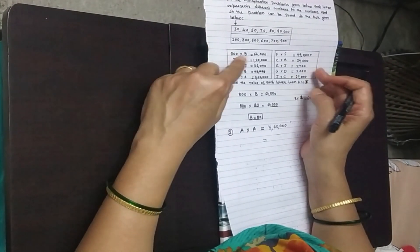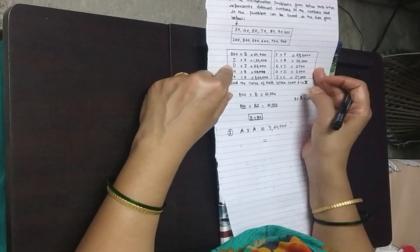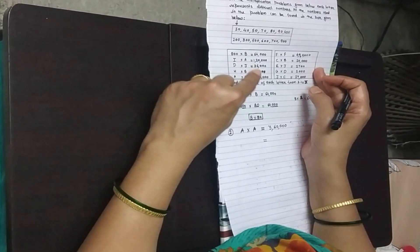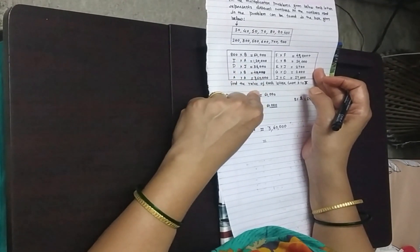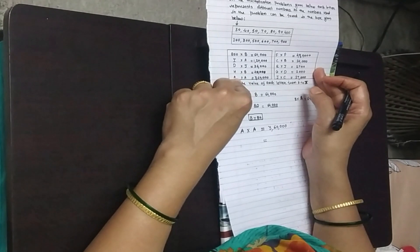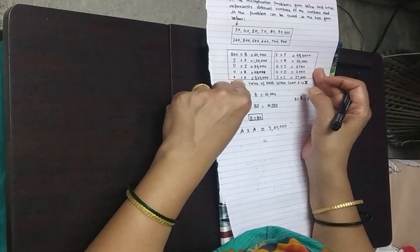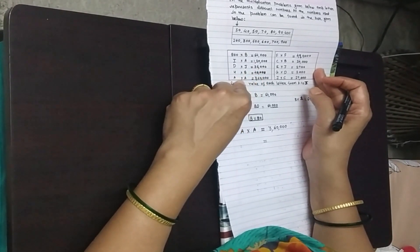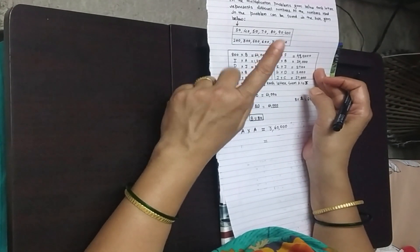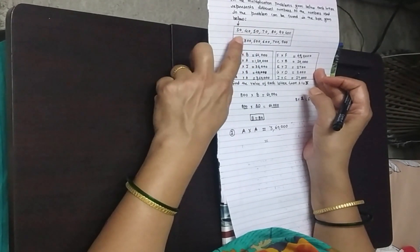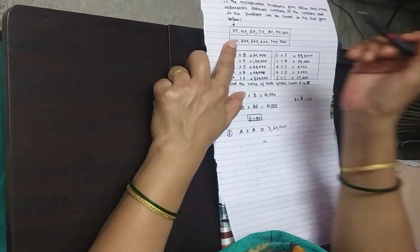In this activity, one multiplication table we have in which alphabets or letters are multiplied to get some product. What we have to do is find out the values of these alphabets or these letters. The values of these letters or alphabets are hidden in this box. So let us see the activity.